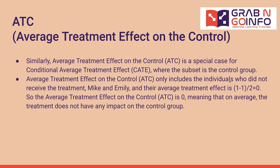Similarly, Average Treatment Effect on the Control is a special case for conditional average treatment effect, where the subset is the control group. It only includes the individuals who did not receive the treatment, Mike and Emily, and their average treatment effect is zero. So the average treatment effect on the control is zero, meaning that on average, the treatment does not have any impact on the control group.